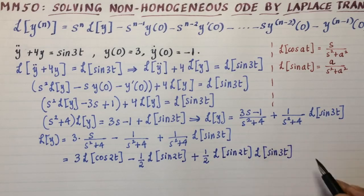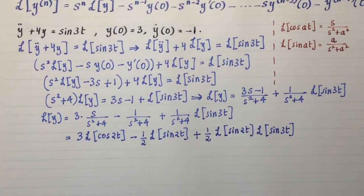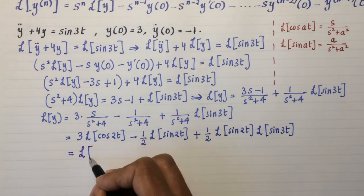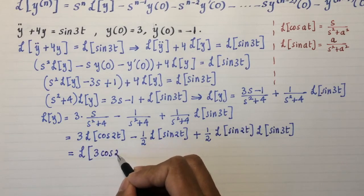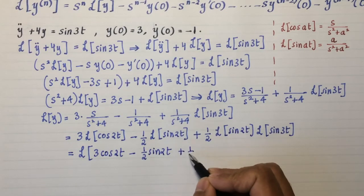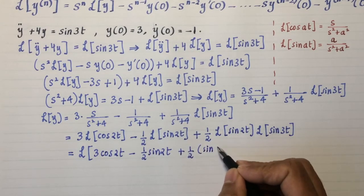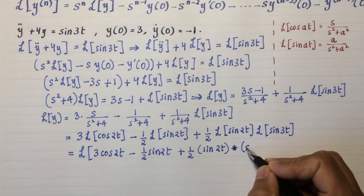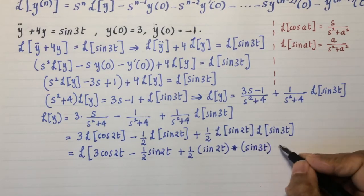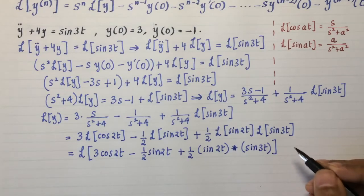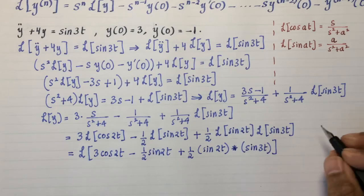Now you can see how the convolution theorems are going to help us at the next stage. I can write this using the linearity of the Laplace transform as a Laplace transform of 3 cosine 2t minus half sine 2t plus half the convolution of these two functions. By one of the convolution theorems that I espoused in the first video of this week, I believe it was video number 48. If you need a refresher on that, that's the video to look at. You get that by an application of one of the convolution theorems.